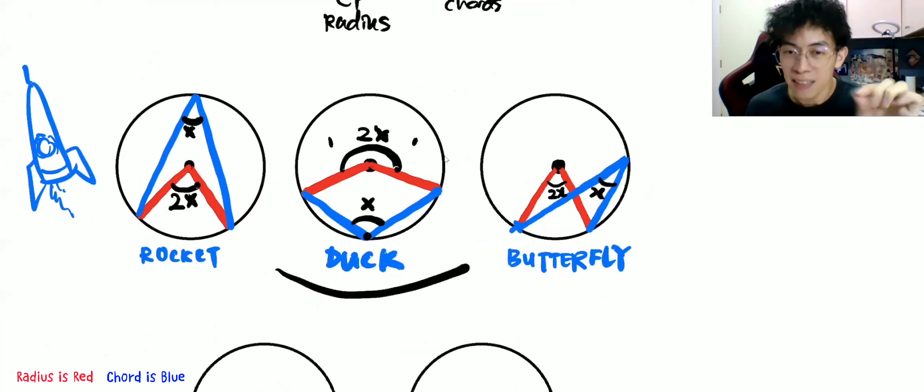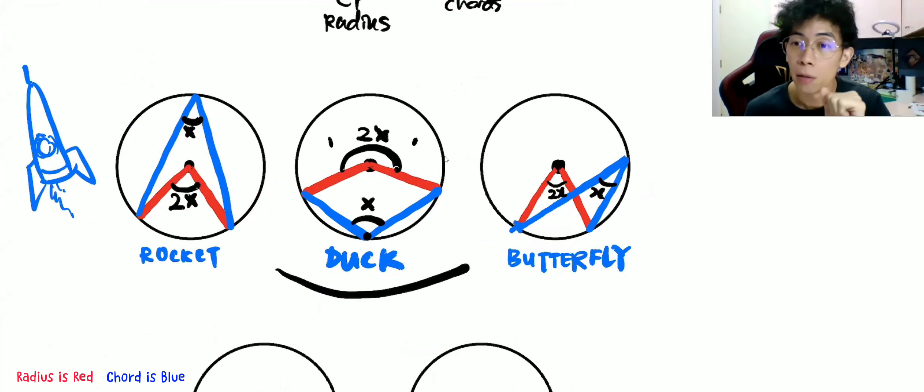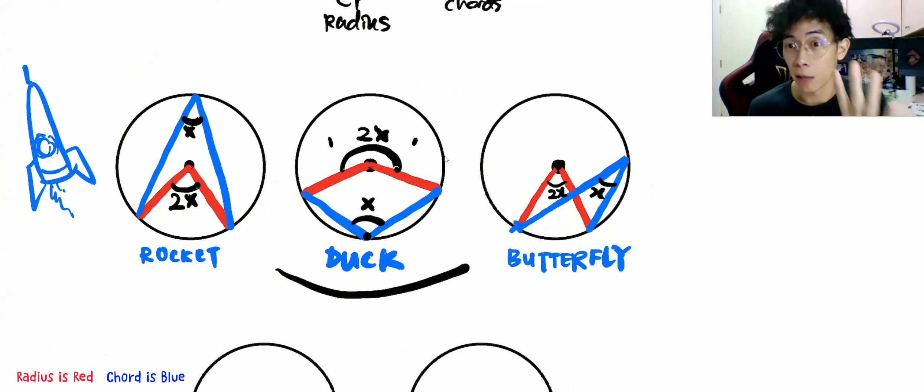Butterfly is actually a rocket — can everyone imagine that? Some of you say yes. As you imagine it, you don't memorize it but you understand how it works, so you know the position. Now you know the center gives you double, and the blue color chord gives you single. As you move the blue color lines around, it becomes rocket, duck, butterfly — it just goes around.